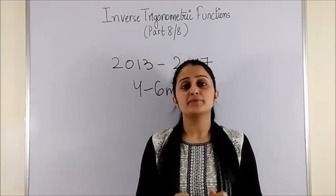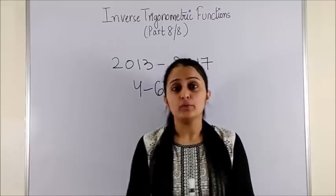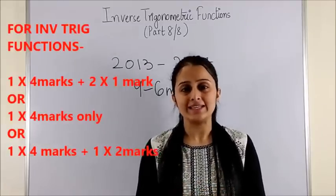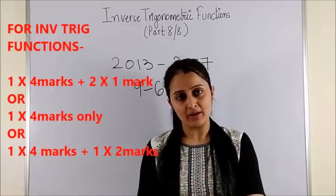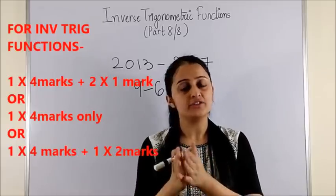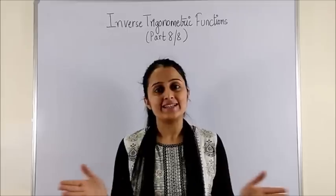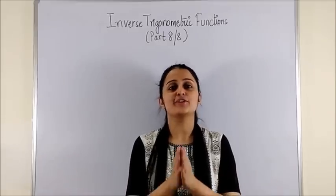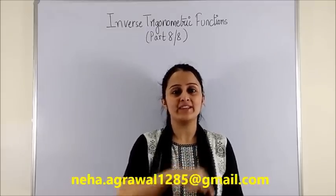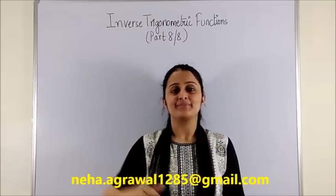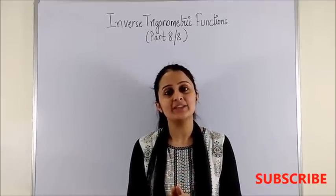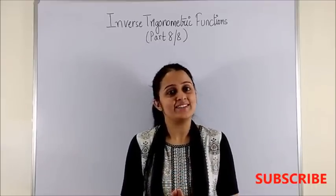Analyzing the papers for the last 5 years, the weightage for this chapter has been 4 to 6 marks. Usually we have seen either a 4-marker with a 1-marker, only a 4-marker, or a 4-marker with a 2-marker — so it could be anything. This brings us to the end of this video. Hope you understood everything. Feel free to send in your queries at the email ID shown. Till then, do not make these mistakes — go through them once again, and I'll see you in the next chapter. Bye-bye.